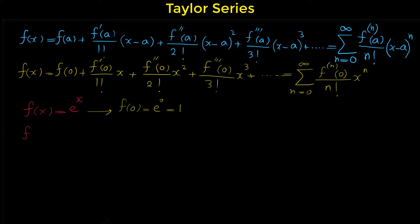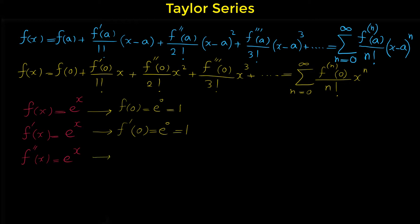Now we have to calculate the derivative of this function. The derivative of e to the x is the same function — it doesn't change. So f prime at 0 is also e to the 0, which is 1. The second derivative is also the same function, e to the x, so f double prime at 0 is again e to the 0, which is 1. As you can see, for this special function all of these values are the same.